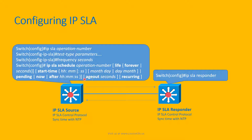By default, the test results stay in memory forever, but we can specify the history-lives (HL) parameter in seconds to wipe out the test results from memory. We can also specify whether it is recurring or not. After configuration, the IP SLA source will send the test type traffic to the responder, and the responder will reply with information back to the SLA source. Based on that, we can configure the IP SLA source to perform a certain action.